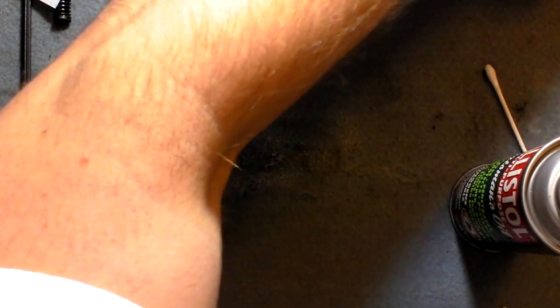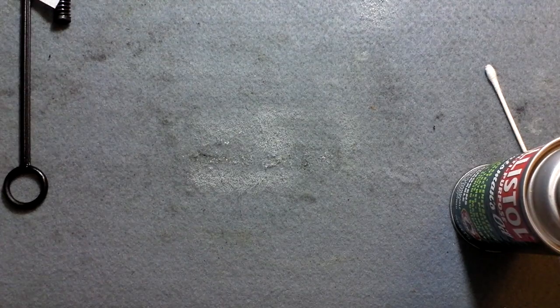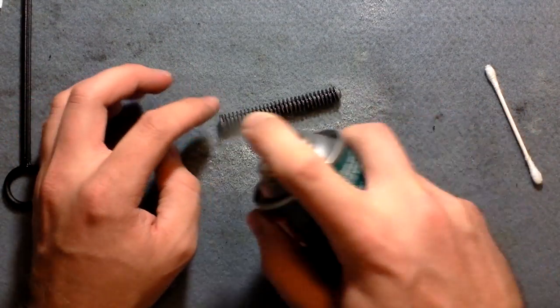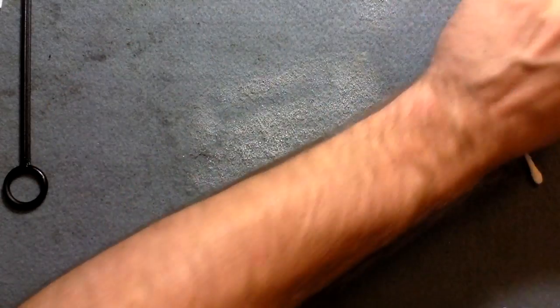I'll spray the outside as well. Ballistol is also a lubricant so this will also assist with your rust prevention. And you'll spray the spring down. Recoil spring. Set that aside.